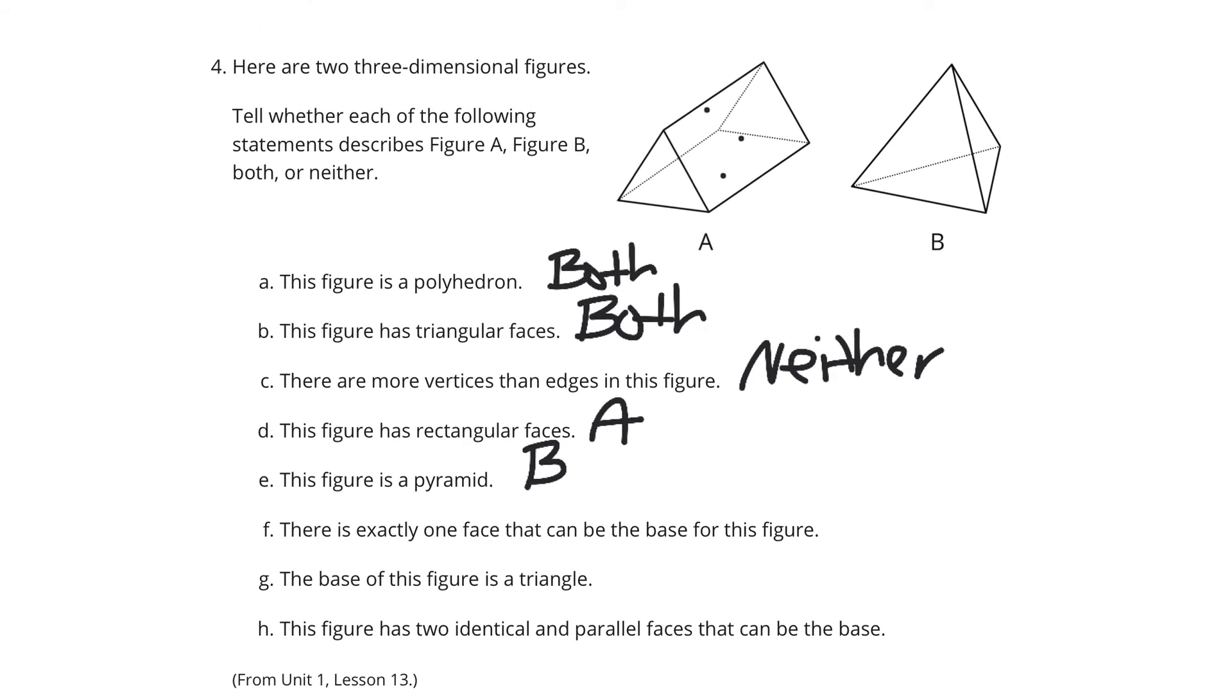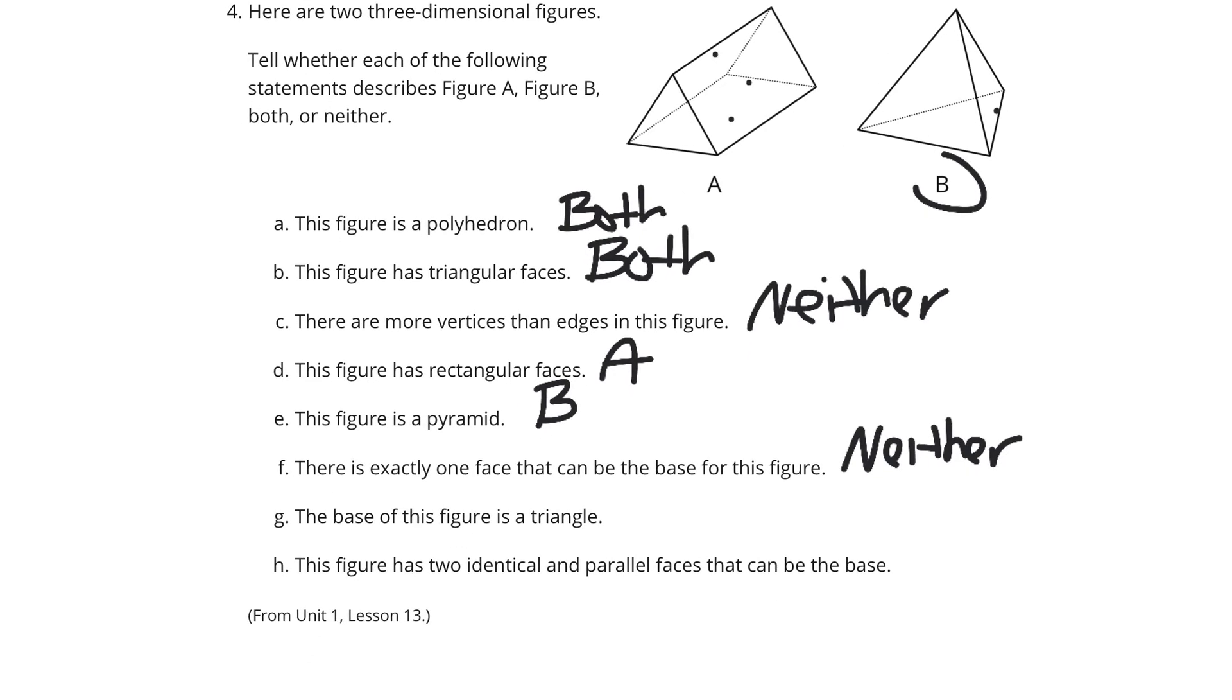Then, there is exactly one face that can be the base for this figure. Well, you would think B, because it's only one base for a pyramid. But, you look at all those triangles, and all those triangles could be the base, because they're all the same. So, we're going to say neither for this one, because B is a special, special pyramid. G, the base of this figure is a triangle. So, that's true for B, and it's true for A. So, for G, we're actually going to say both. And then, in H, this figure has two identical and parallel faces that can be the base. So, that's what a prism has, and that's going to be A.